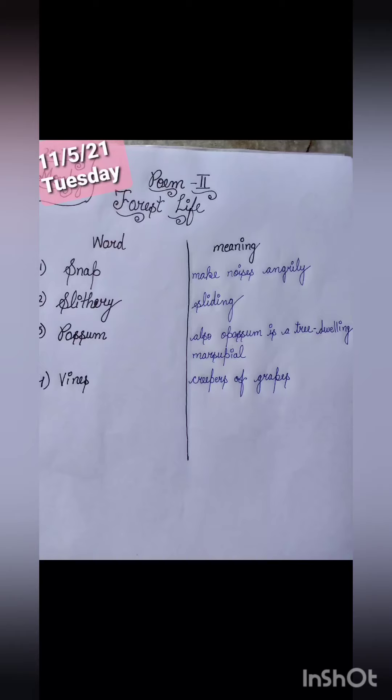As we have done the reading of the poem too, I hope you understood with the help of the video. So let's start with the word meanings and question answers. You have to write the heading like Poem 2, and then the name of the poem, that is Forest Life. On the left side write the date and the day.